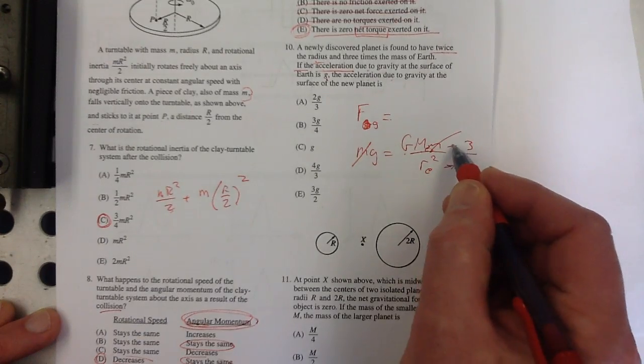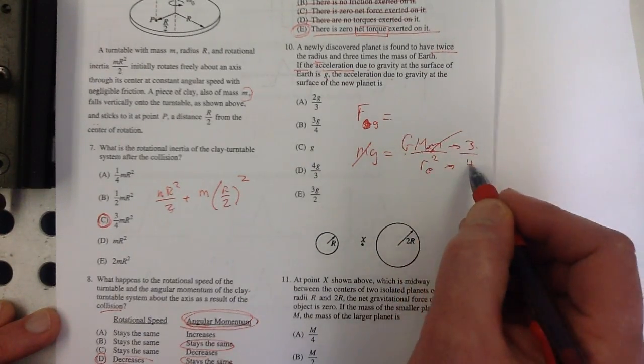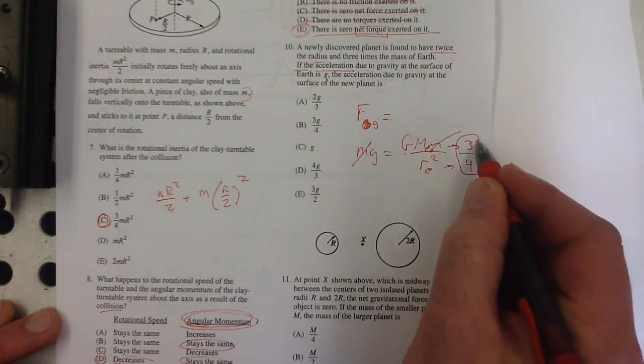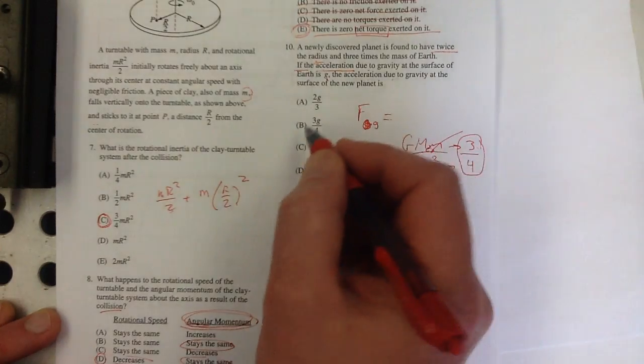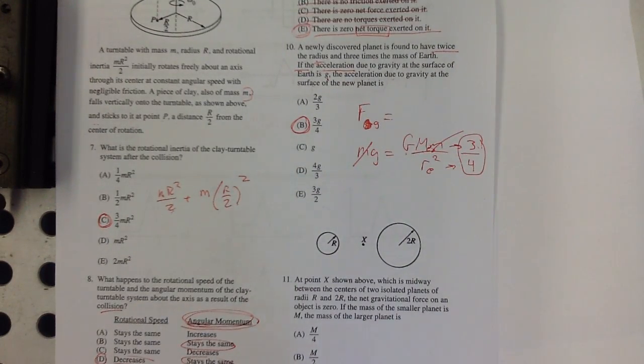Three times the mass is going to increase by a factor of three, but doubling the radius is going to decrease by a factor of four. So three fourths of our acceleration. A little proportional reasoning there.